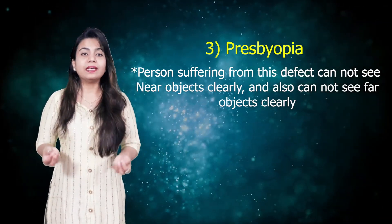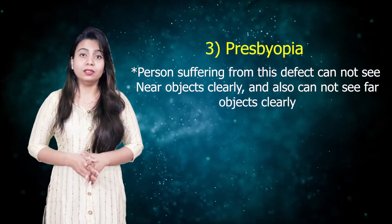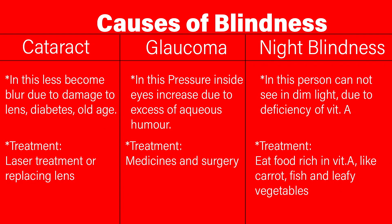Now, there are some cases when a person loses their vision. There are three causes of blindness — look at the screen. Three diseases you can see: first is cataract, second is glaucoma, and third is night blindness. In cataract, the lens becomes blurry due to damage to the lens. It generally happens in old age and can also happen due to diabetes. The treatment for this is laser treatment, or we can replace the lens completely.